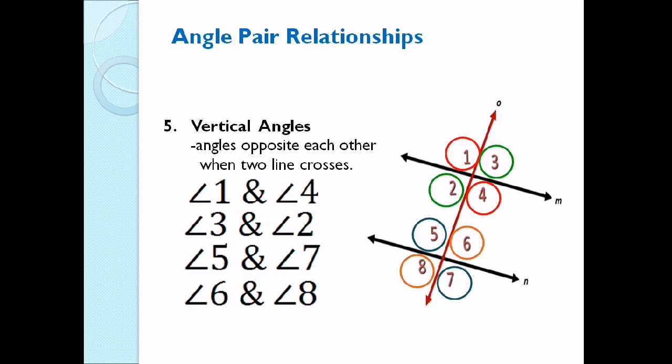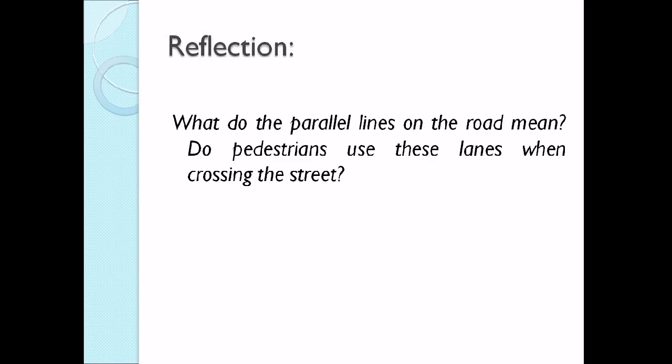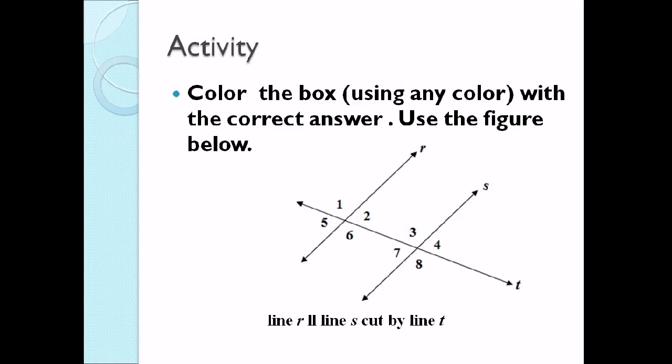We will use these angle pair relationships when we have measurements involved, so we can apply the properties of angle pair relationships. For your reflection: What do the parallel lines on the road mean? Do pedestrians use these lanes when crossing the street? We all know how important pedestrian lanes are — they help avoid accidents. For your activity, color the box using any color with the correct answer. Use the figure below: line R is parallel with line S, cut by line T.